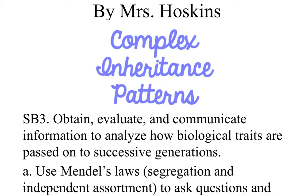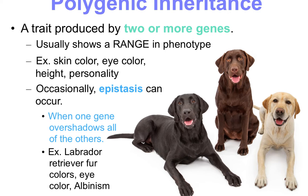Let's look at complex inheritance patterns. Polygenic inheritance is a trait produced by two or more genes, and it usually has a range in phenotype. One popular example is skin color, which goes from low melanin production — a light color — all the way up to high melanin production, which is a very dark color. Other examples include eye color, height, and even personality, since height exists on a scale, it is polygenic as well.